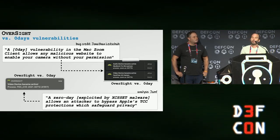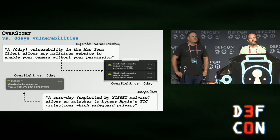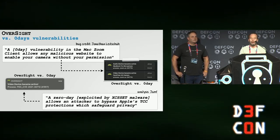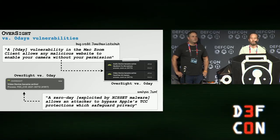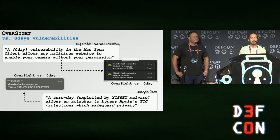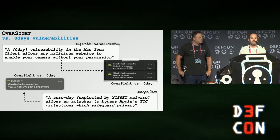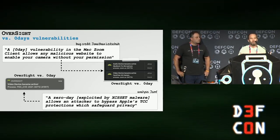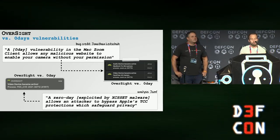Oversight is also pretty good at detecting zero-day vulnerabilities, specifically those that relate to webcam or mic access — remote Zoom bugs or zero-days that Mac malware was exploiting. On the slide we have some examples of malware with zero-days or other vulnerabilities. Oversight can detect these because it doesn't care how the mic or webcam is accessed, just that it was.